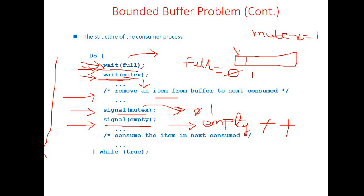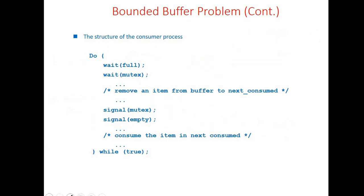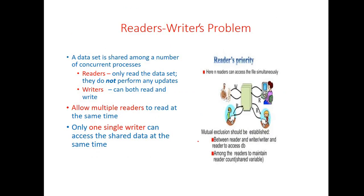If at least one element is there, the consumer can perform these operations. In this way both the producer and consumer use the mutex variable to get permission to enter the critical section and access the buffer content. In the producer-consumer problem there is only one producer and one consumer accessing the buffer.